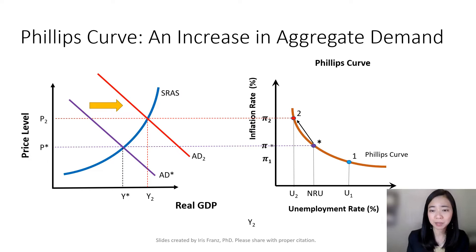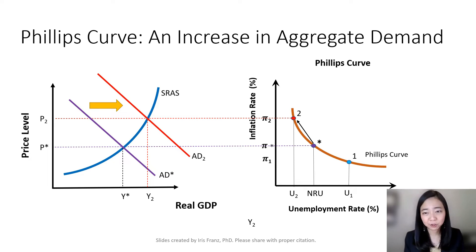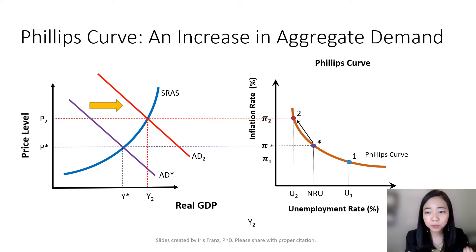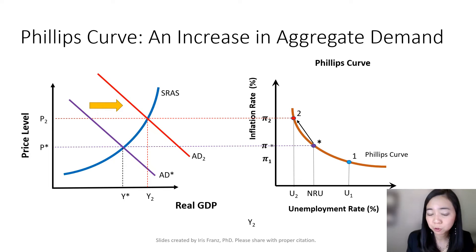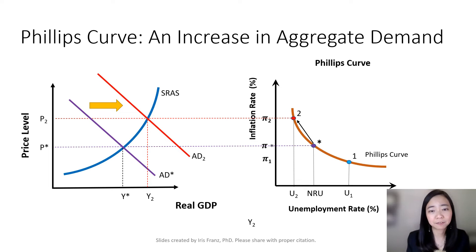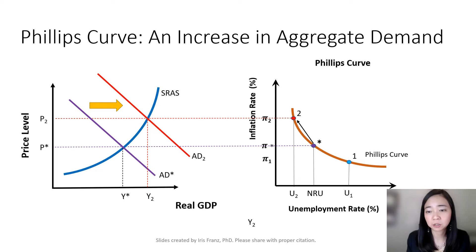Now suppose there is an economic expansion, which shifts our aggregate demand curve from AD* to AD2. As a result, the price level goes up and our output also goes up. When real GDP is higher than its potential, our unemployment rate is lower than the natural rate of unemployment — our new unemployment rate is at U2. At the same time, our inflation rate has increased from pi* to pi2, let's say from 2% to 6%.